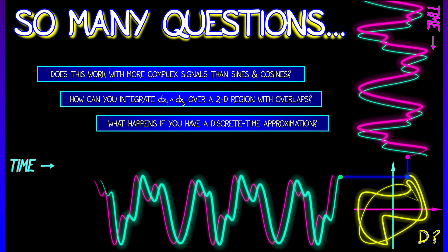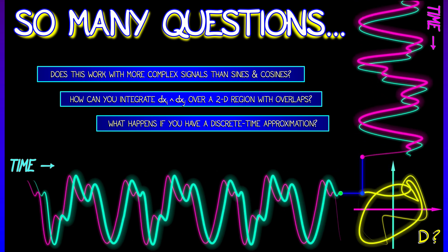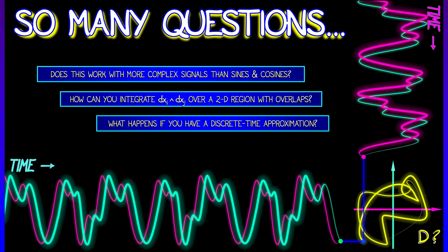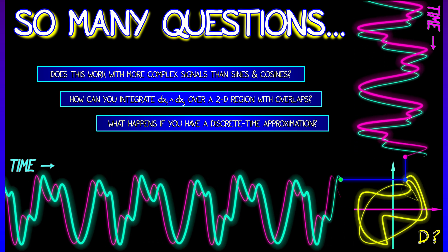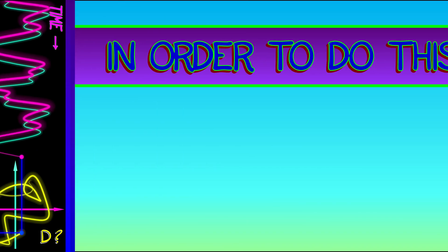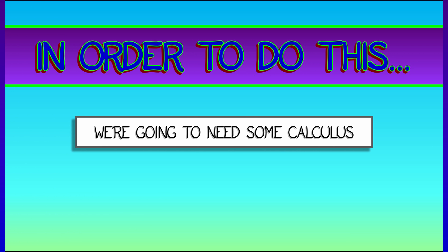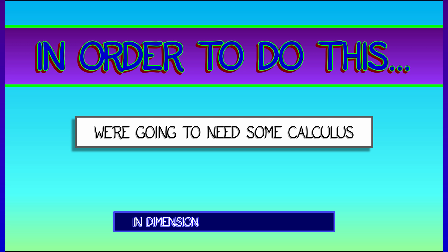What happens if we, instead of having continuous time signals, have discrete time signals? All kinds of questions crop up. In order to answer them, we're going to need more tools. We're going to need calculus. Calculus for differential forms in dimensions higher than three. And that's what comes next.